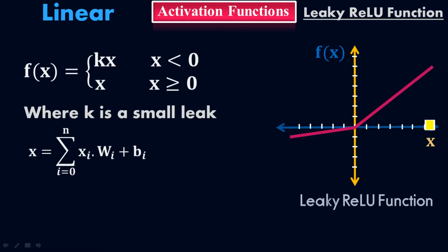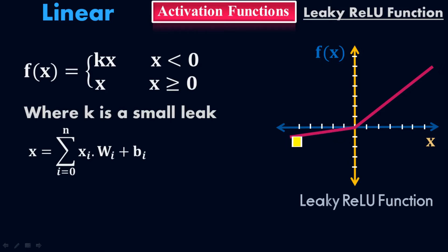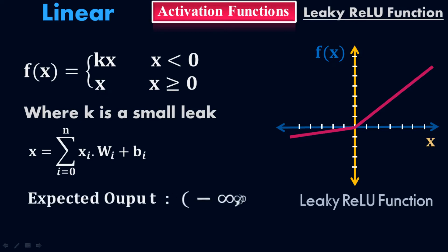Comparing Leaky ReLU with the ReLU activation function: ReLU only returns 0 when x is less than 0 on the negative side. But for Leaky ReLU, it is kx when x is less than 0, where k is a small leak. We can clearly see in the graph that there is a small leakage on the negative side, not on the positive side. On the positive side, whatever value you input to the neural network, it will return exactly the same value in the output.